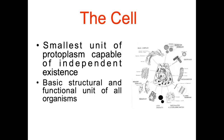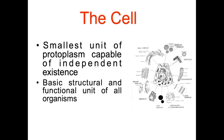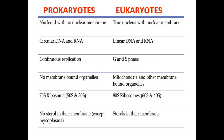The cell is considered to be the smallest unit of protoplasm capable of independent existence. It is the basic structural and functional unit of all living organisms. Now, what is the difference between a prokaryote and a eukaryote? Let's go through this table and highlight some things you should bring to your exams.